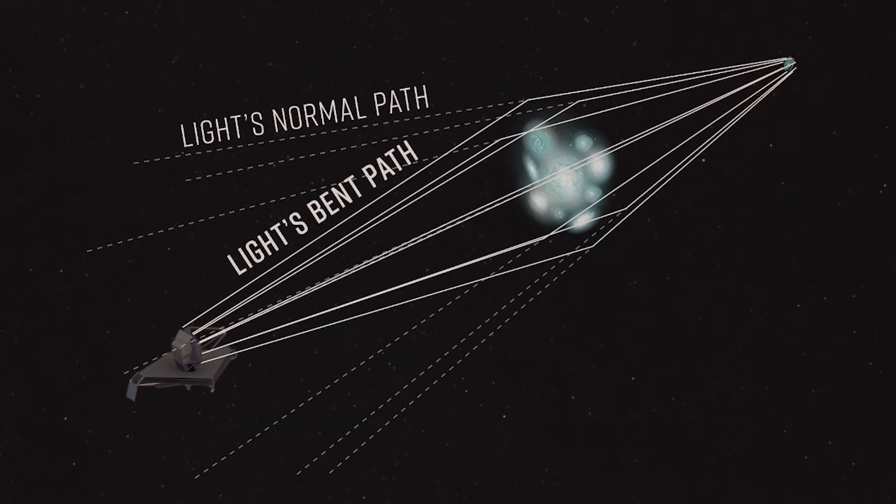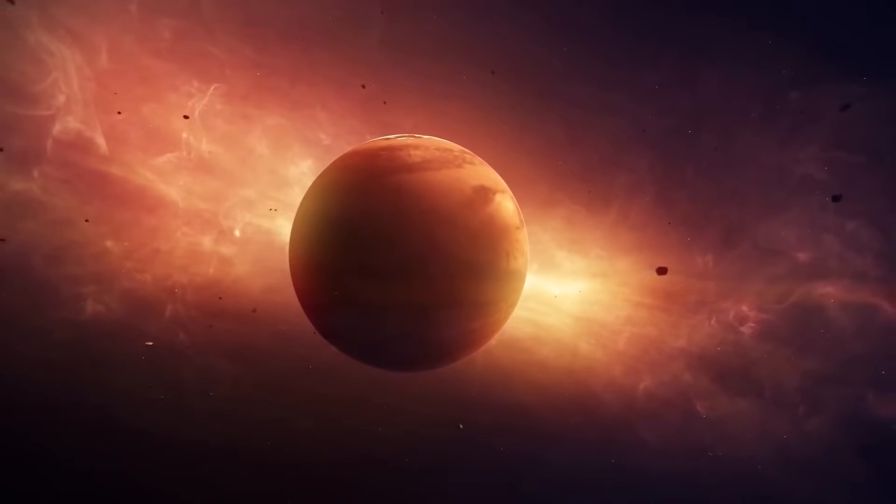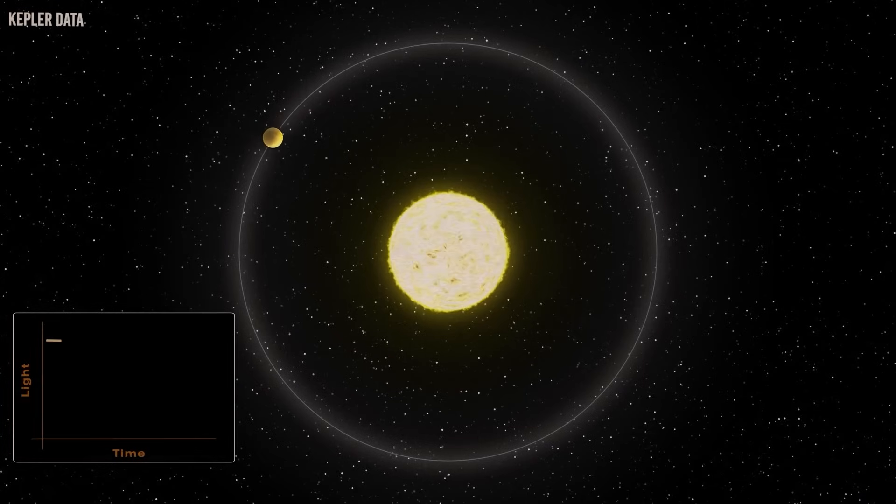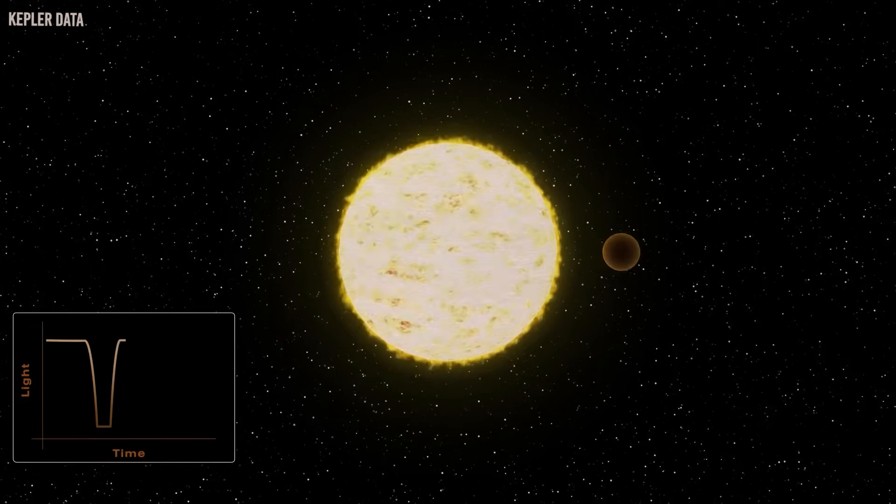Imagine planets doing their thing thousands of light-years away from us. That's what the JWST is all about, diving into the world of exoplanets. There are more than 5,000 of these known exoplanets, and scientists have been peeking at them indirectly, using the light from the stars they orbit. But until recently, getting a direct look at these faraway planets was like trying to catch a shooting star. Last September, though, the JWST snapped a picture of an exoplanet named HIP 65426b. This gas giant hangs out a hundred times farther from its star than we do from the Sun, and it's 12 times bigger than Jupiter.